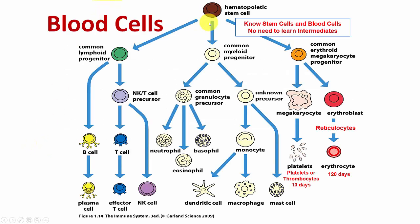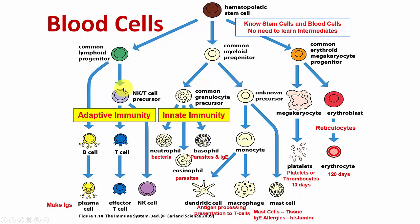This is a diagram showing the blood cells. All blood cells start out made by the bone marrow. In the bone marrow there is a hematopoietic stem cell, and this stem cell differentiates into many other cell types. Among them are the lymphoid progenitors, which give rise to cells that provide adaptive immunity.